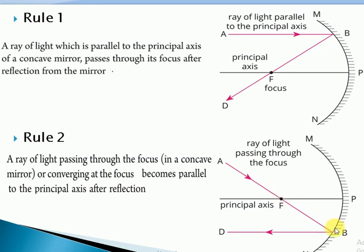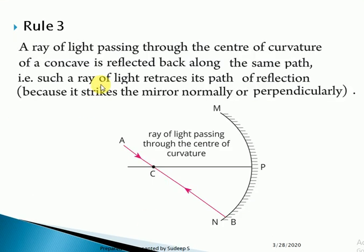Rule 3: A ray of light passing through the center of curvature of a concave mirror is reflected back along the same path. This happens because it strikes the mirror normally, or perpendicularly. Even if a ray of light passes along the principal axis, since the center of curvature lies on the principal axis, it will reflect back along the same path.